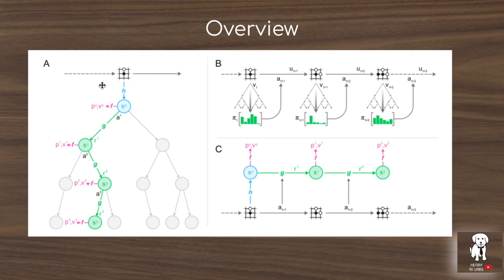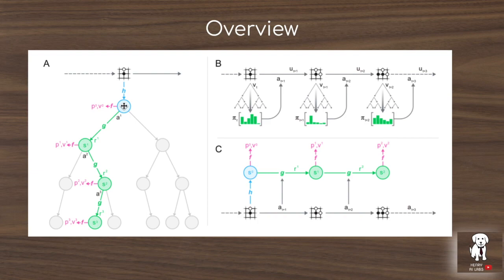MuZero still has the same policy and value network, but it now takes as input the hidden state from the representation function. The dynamics function — the third neural network — takes in a state and action and maps them to a reward and a next state. This overview shows how the Monte Carlo tree search uses these components: MCTS takes from a given policy and produces a new distribution of actions via look-ahead search, finding better actions than the raw policy alone, with the representation, policy/value, and dynamics functions all working together.